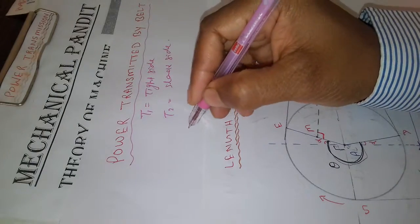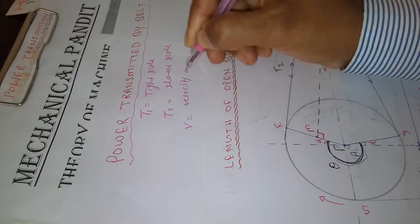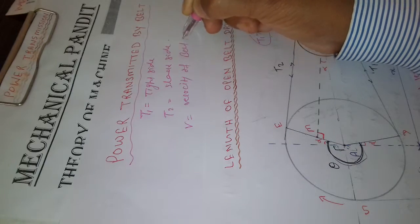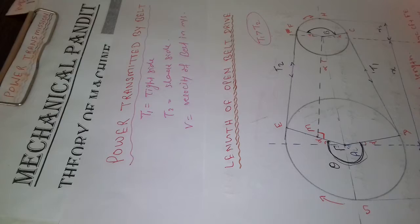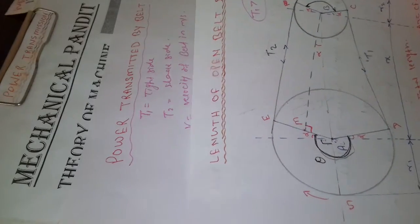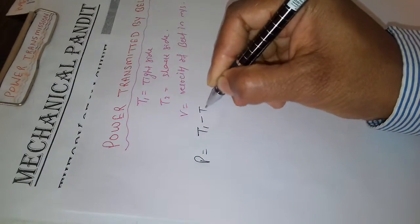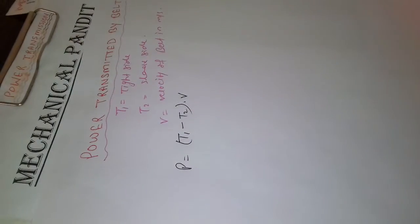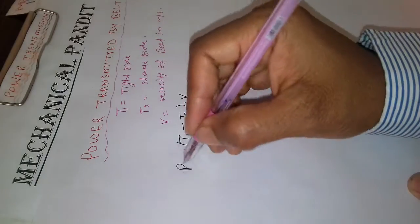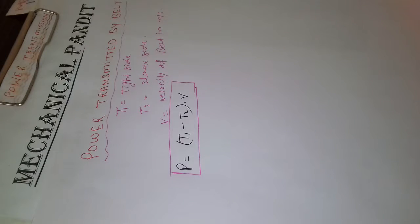We have to consider V, the velocity of the belt in meters per second. The power transmitted by the belt will be the net tension (T1 minus T2) multiplied by velocity V. That is the power transmitted by the belt.